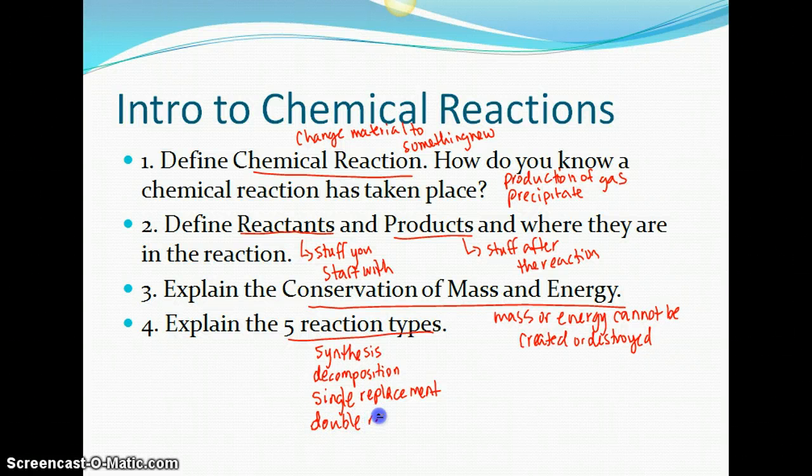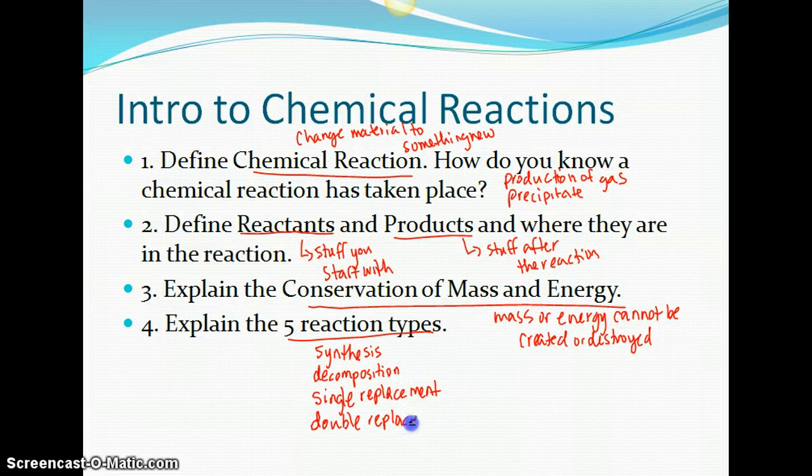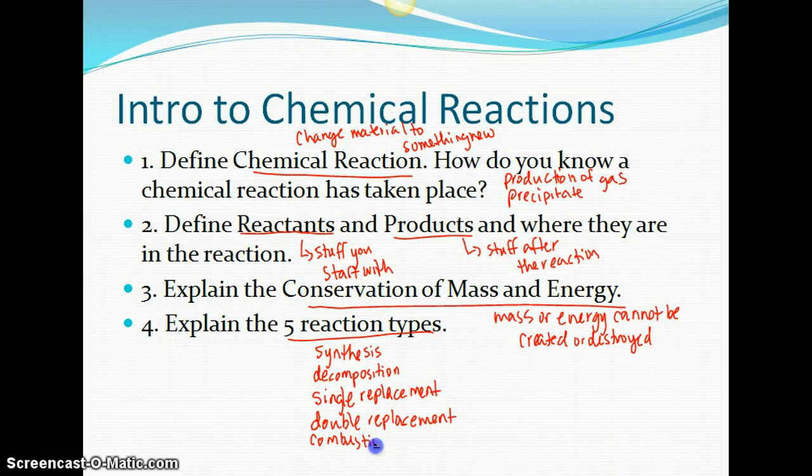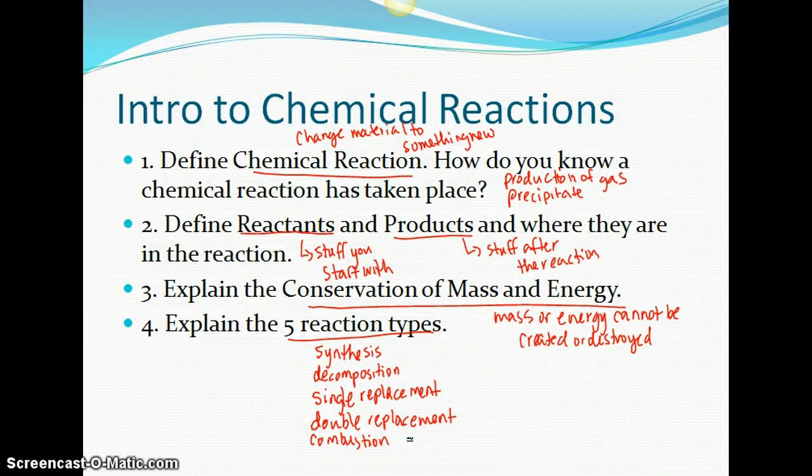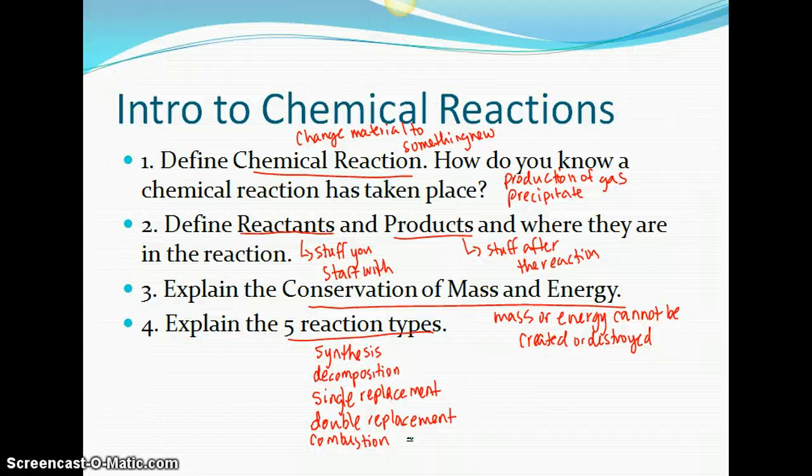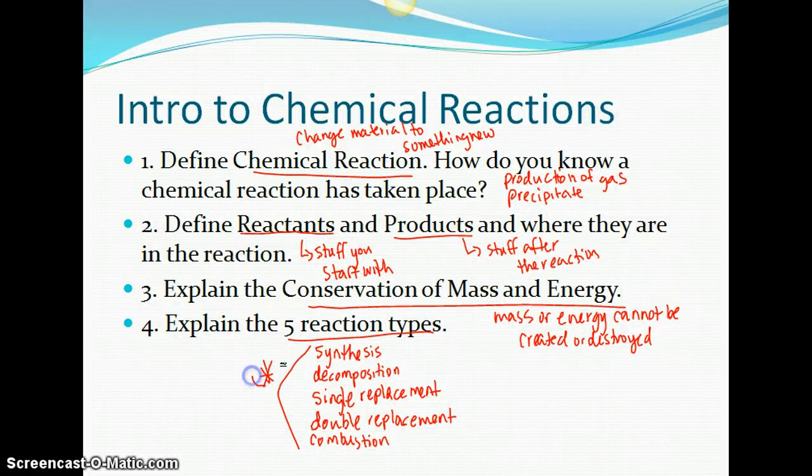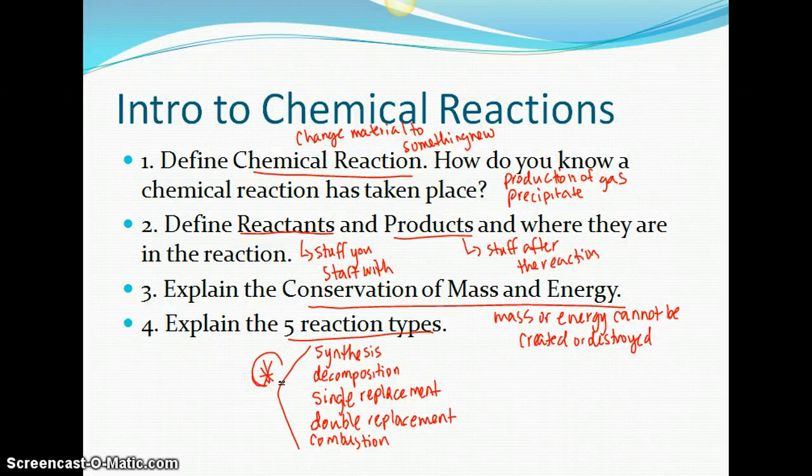And then double replacement. Everybody traded dance partners, so there's just lots of compounds in this one. The fifth one that we had was combustion, and combustion has to have oxygen on the left side of the equation. Oxygen has to be there in order for it to start burning, and then there's water on the right side of the equation. So make sure you look back over these examples we had in our notes, and also look back over your worksheets where you've practiced those as well.